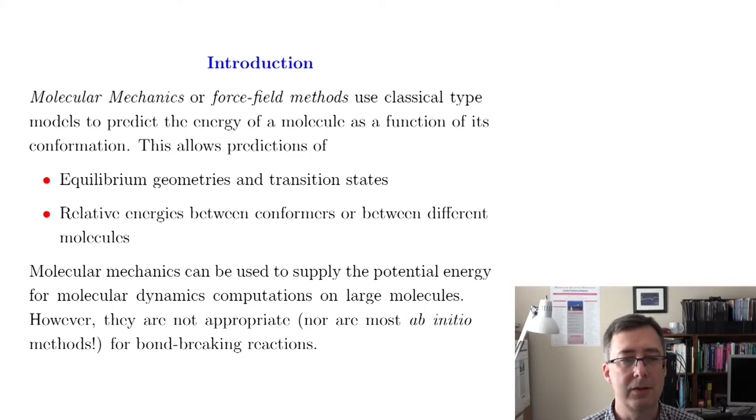So to predict an energy of a molecule as a function of its conformation based on the bond lengths and the bond angles and all these kind of things. If you are able to predict that then you can predict equilibrium geometries. Those are just the geometries that minimize the energy. Or you can predict the geometries of transition states with a few caveats. Sometimes these molecular mechanics approaches are not as good at deformed geometries like you see sometimes in transition states.